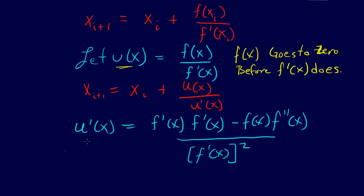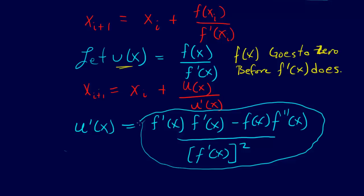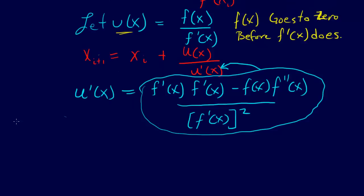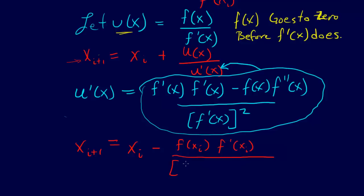We can plug this result back into the iteration formula and simplify, writing everything in terms of f(x). When we do that and plug it into the equation, we get: x_{i+1} = x_i - [f(x_i) · f'(x_i)] / {[f'(x_i)]² - f(x_i) · f''(x_i)}.